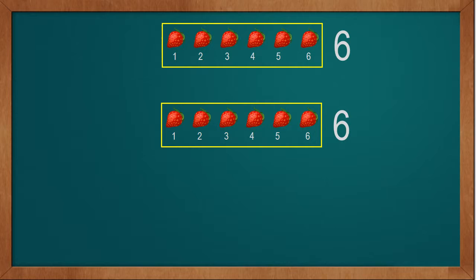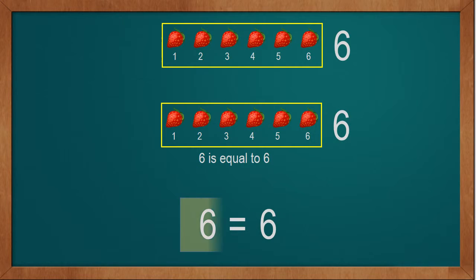Now we will compare 6 strawberries with 6 strawberries. Here we see the number of 6 strawberries is the same as the number of 6 strawberries. The quantity of both is the same, so we write: 6 is equal to 6. We write it as 6 equal-to sign 6.